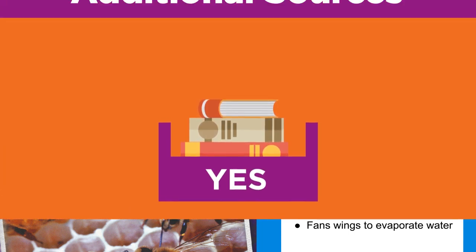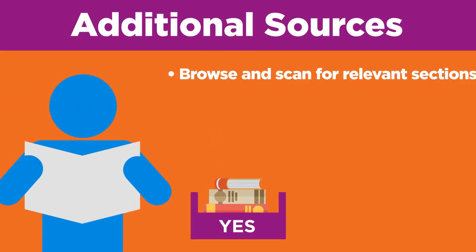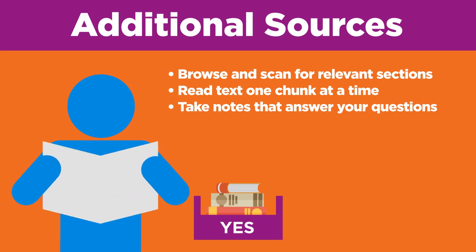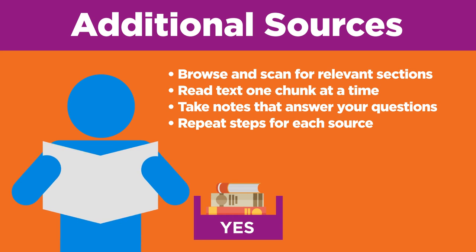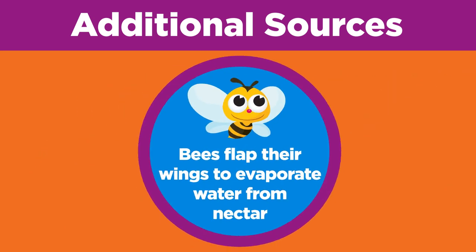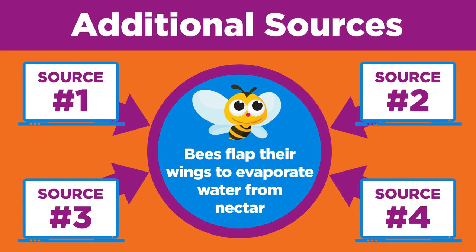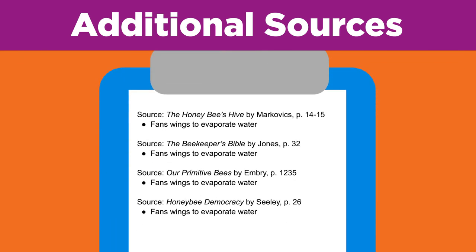Now it is time to take a look at your second source. Again, browse and scan to identify relevant sections, read the text one chunk at a time, and take notes on information that answers your questions. When you're done, repeat these steps using the next source. By now you should have read some of the same information in multiple sources. This is a good thing because it validates or confirms the information you have found. However, there is no need to take notes on repeated information unless an author provides a new twist, a better explanation, or new details.